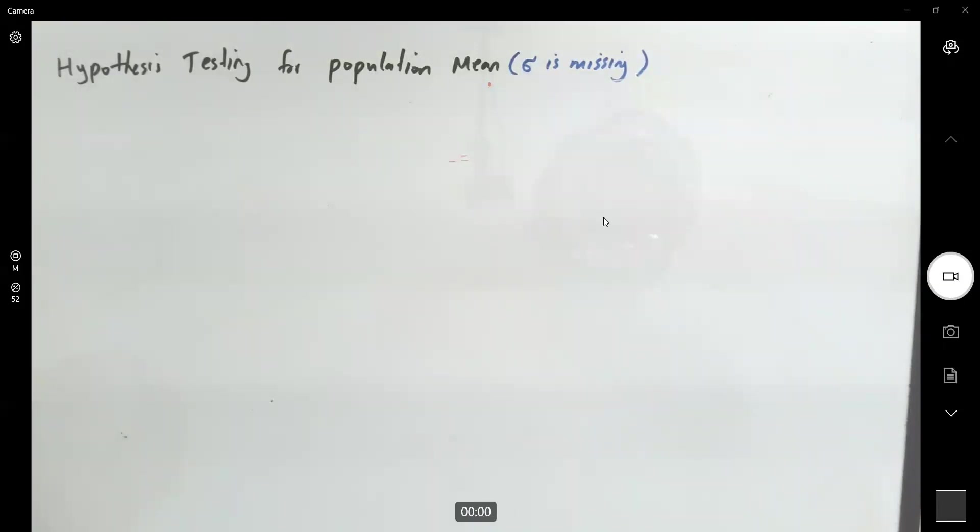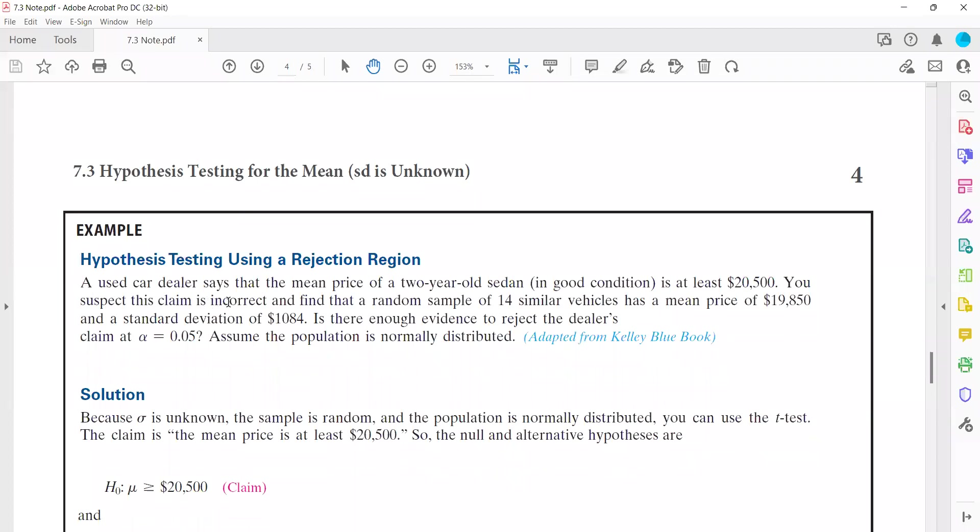In this example, we have a used car dealer that claims the mean price of a two-year-old sedan in good condition is at least $20,500. You suspect this claim is incorrect.